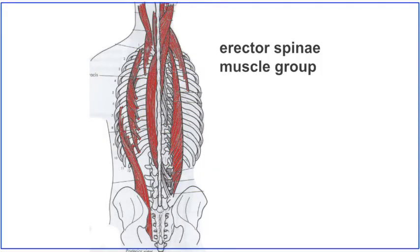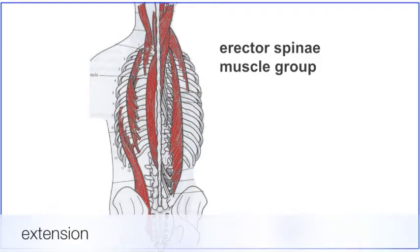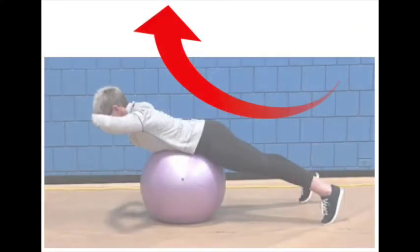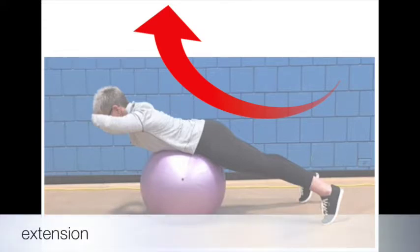Finally, this is the erector spinae muscle group. It begins at the pelvis and runs up both sides of the spine, attaching to various ribs along the way. Joint action of the erector spinae is spine extension. During good standing and seated posture, the erector spinae works isometrically to keep the spine extended. The prone back extension exercise is an example of the erector spinae generating force to concentrically extend the spine.